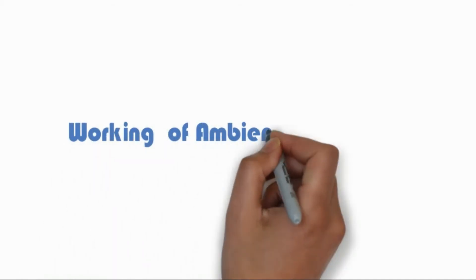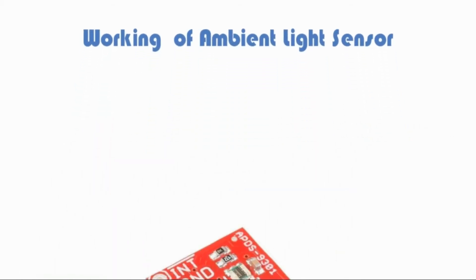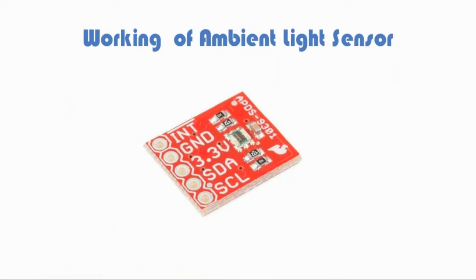Working of Ambient Light Sensor. An ambient light sensor is a component which is utilized in mobile devices, smartphones, notebooks, LCD TVs, and automotive displays.